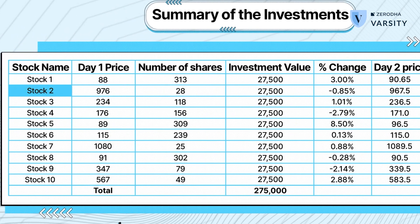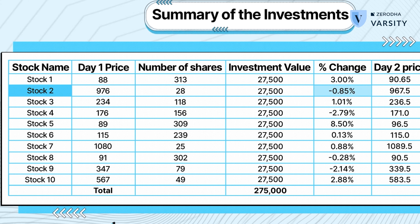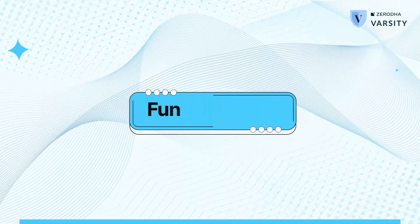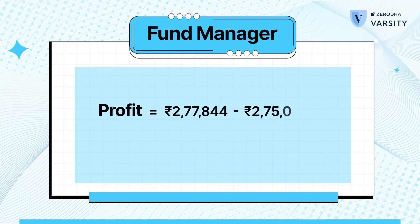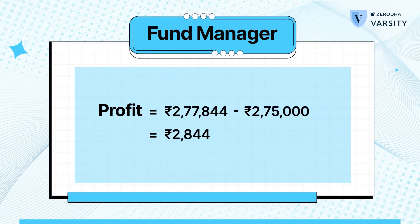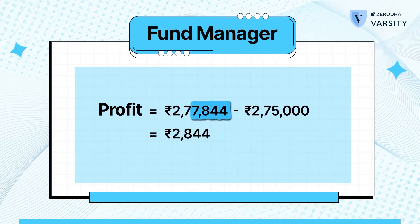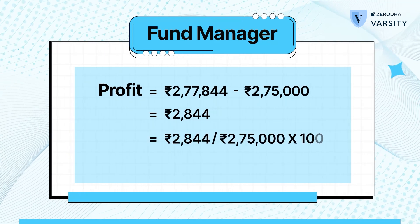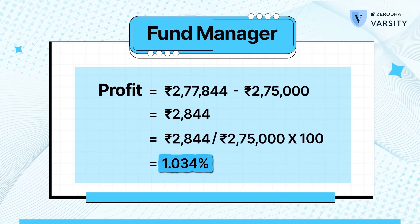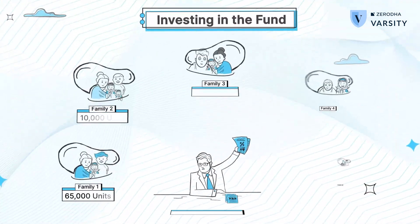Stock 2, on the other hand, has declined by 0.85%, and so would the investment in that stock. The sum total of all the stocks, by factoring in the increase and decrease in each stock, will give the overall value of the fund. In this case, the fund manager on day 1 has managed to generate a profit of 2,844 rupees. Hence the total value of the fund grows to 2,77,844 — in other words, the fund made a profit of 1.034% on day 1.